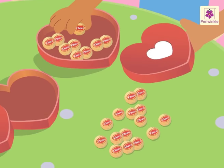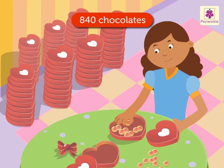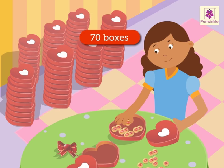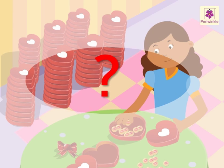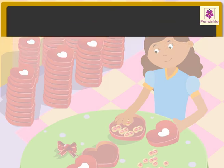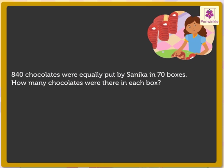Look at the yummy chocolates. 840 chocolates were equally put by Sanika in 70 boxes. How many chocolates were there in each box?